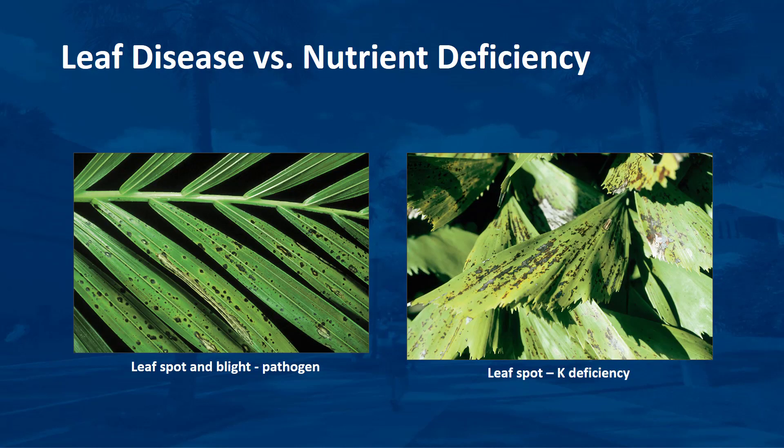To complicate matters even further, it is possible to have both a nutrient deficiency and a leaf spot disease. Furthermore, some nutrient deficiencies look like a leaf spot disease. If you cannot decide which problem you are observing, then collecting samples for both a disease diagnosis and a leaf nutrient analysis may be necessary. However, this will require duplicate samples and may require sampling different tissue on the same plant.